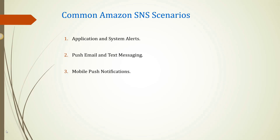The third scenario is mobile push notification. Mobile push notification enables you to send messages directly to mobile apps. For example, you could use Amazon SNS for sending a notification to an app indicating that an update is available. The notification message can include a link to download and install the update.